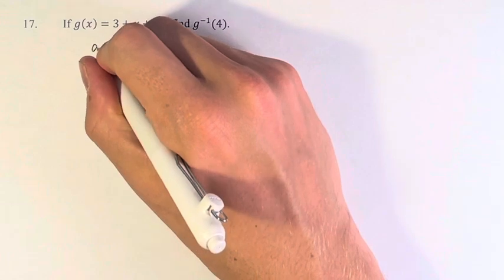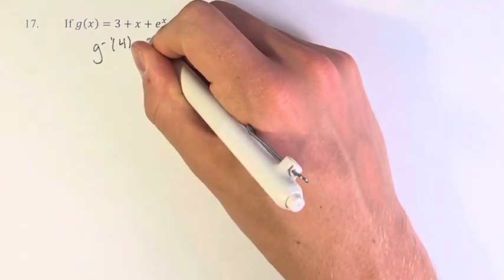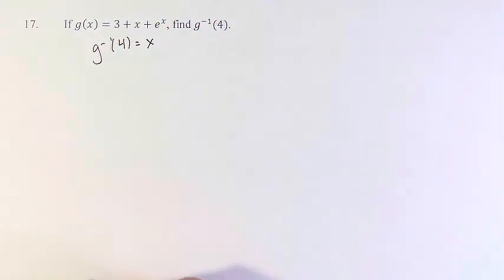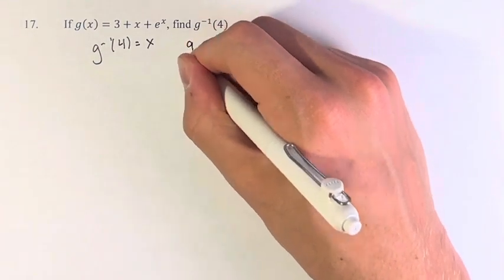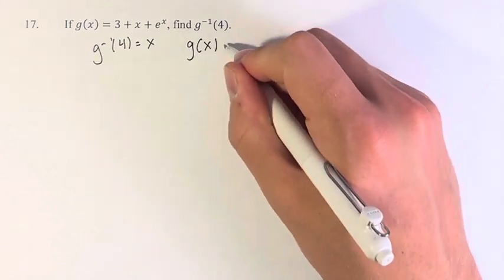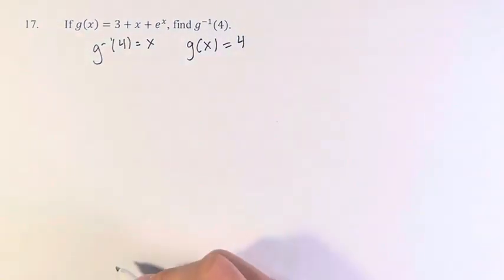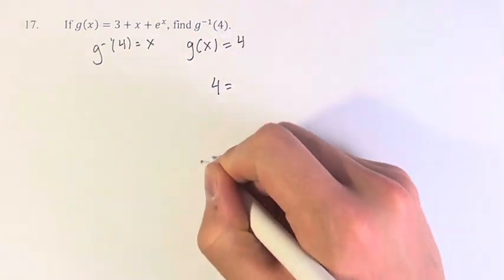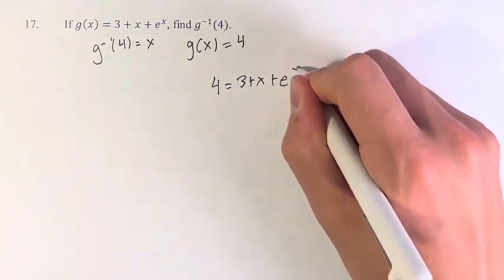So if g inverse of 4 equals x, then g of x for whatever x is equals 4, because we swap the variables. Therefore, we plug in 4 for g of x. We have 3 plus x plus e to the x.